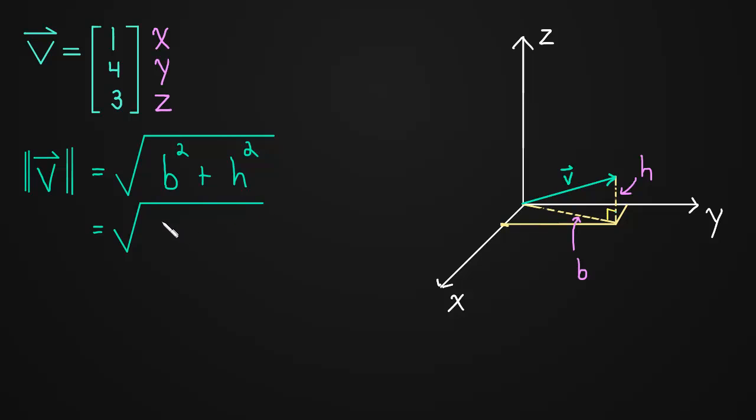Took care of that. This is b squared plus three squared. Now what about b?